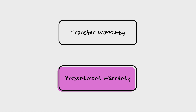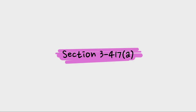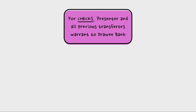Now the presentment warranty. Transfer warranty applied every time there was a transfer. A presentment warranty, under Section 3-417(a), applies when the instrument is presented — but it works differently than you may think. For checks, the presenter and all previous transferors are warranting to the drawee bank. That last part — all previous transferors — is the unintuitive part.